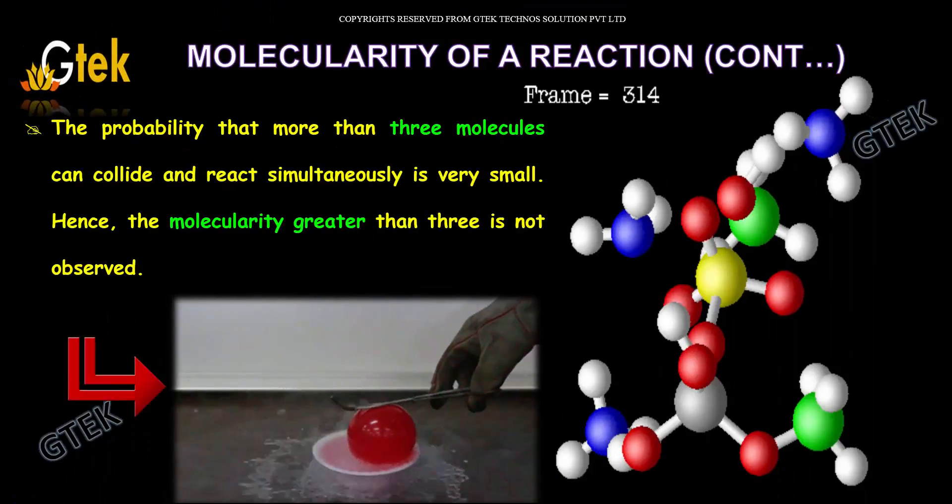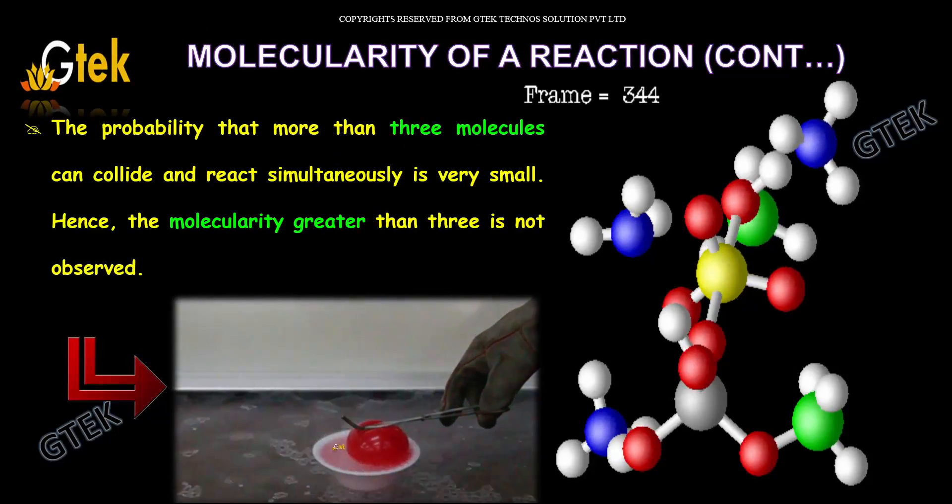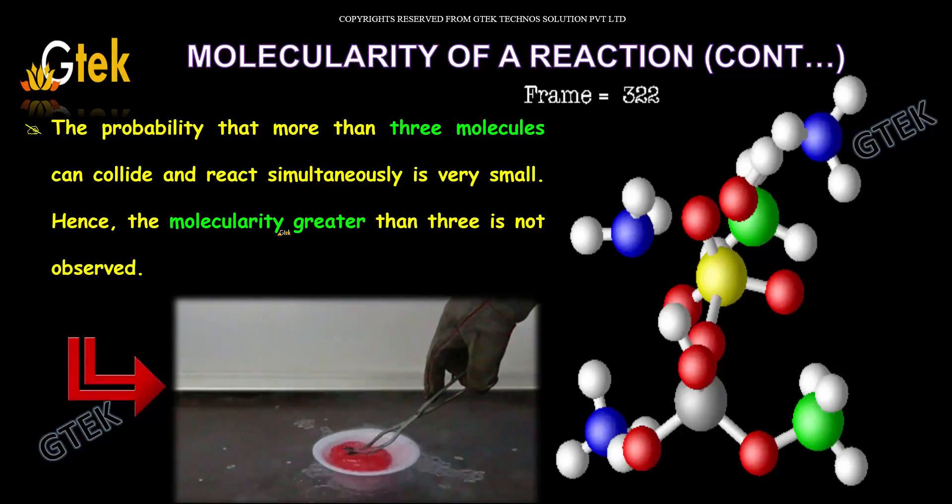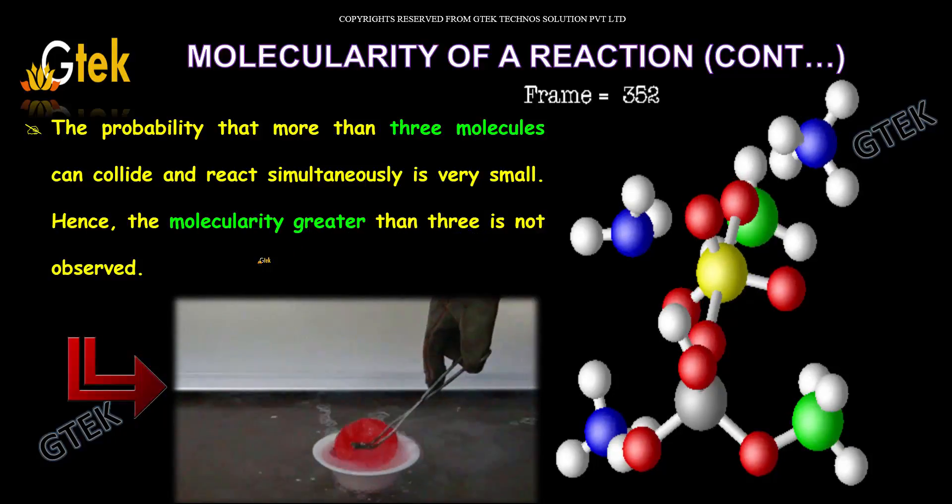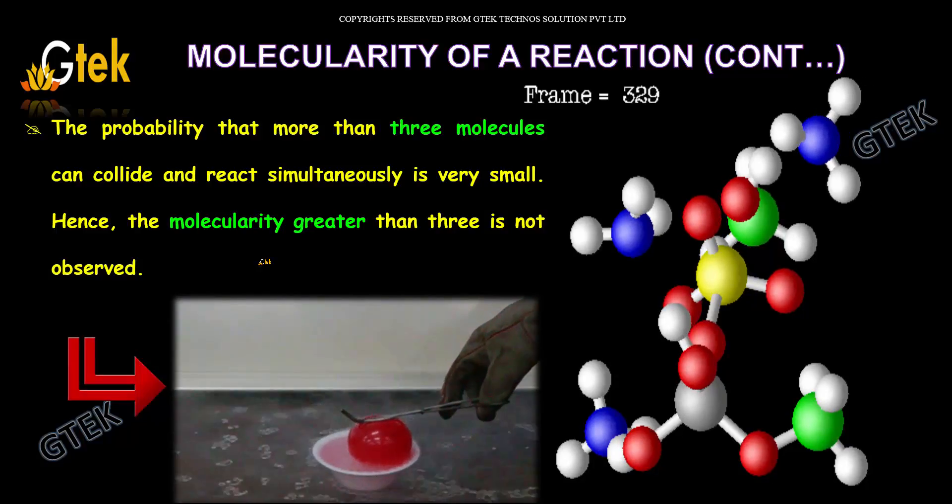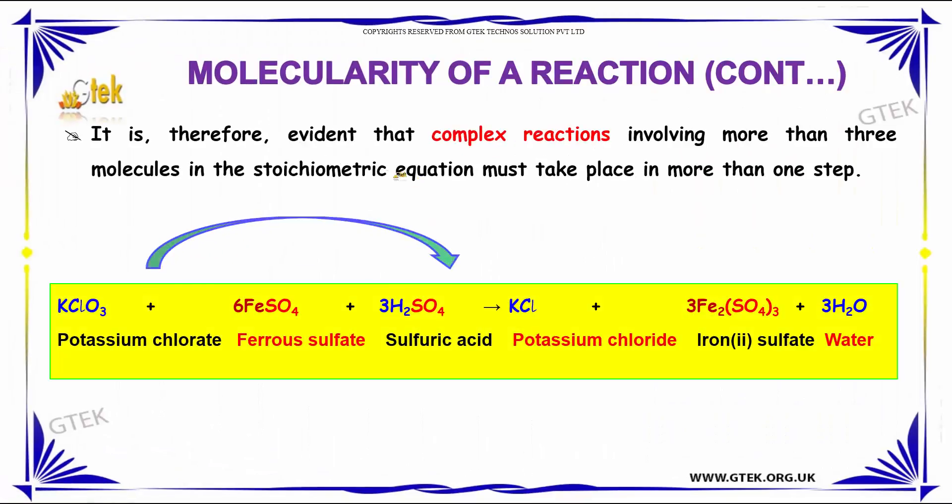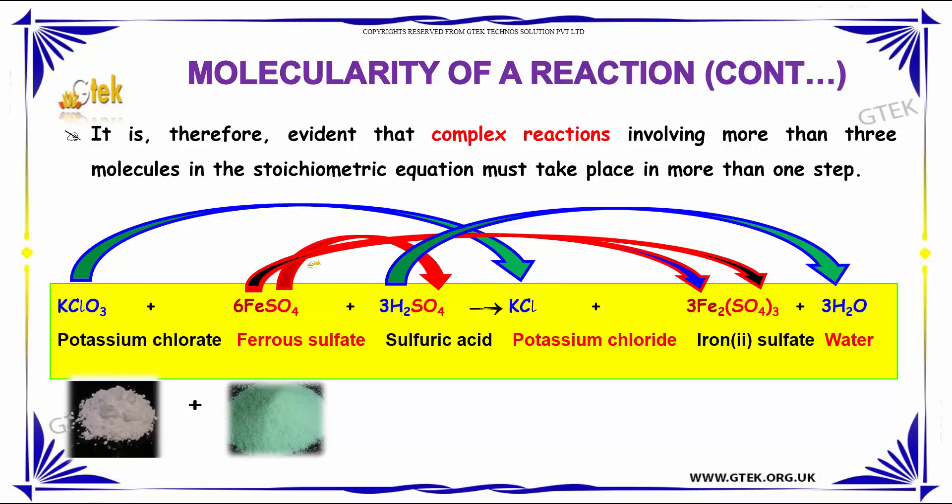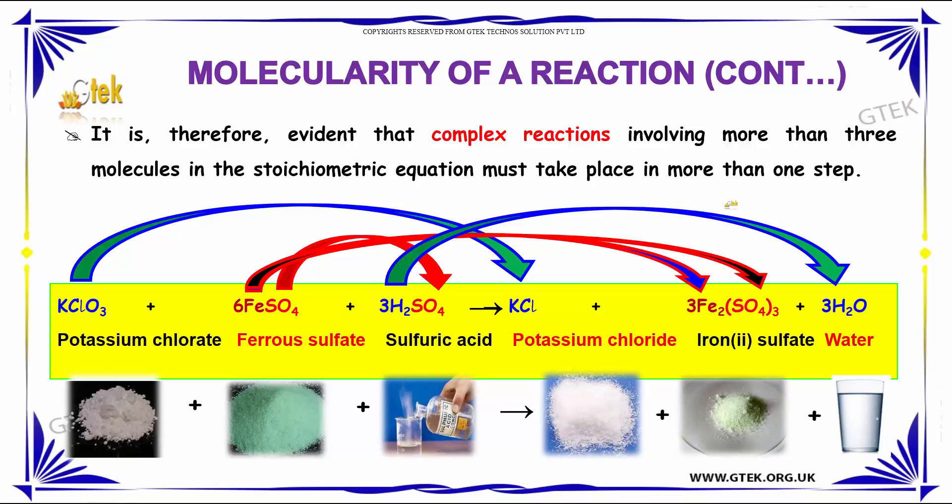The probability that more than three molecules can collide and react simultaneously, hence the molecularity is greater than three, is not observed. It is therefore evident that the complex reactions involving more than three molecules in a stoichiometric equation must take two steps or more than one step. Potassium chlorate with ferrous sulfate and sulfuric acid gives potassium chloride, iron sulfate and water.